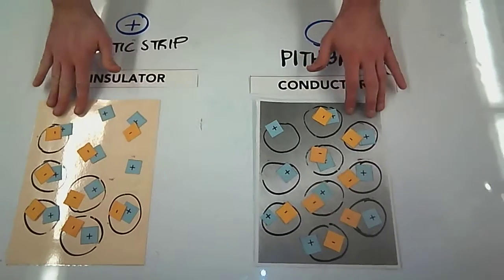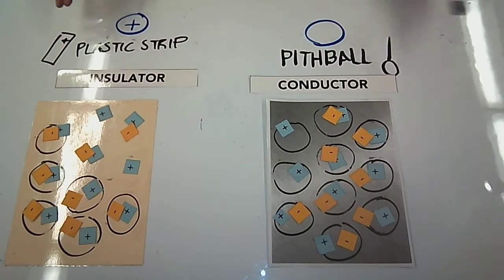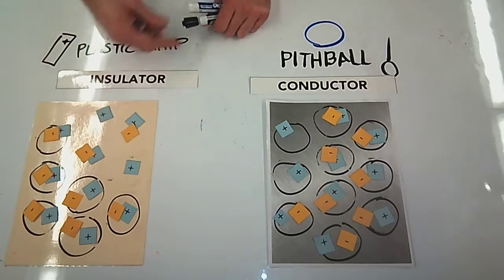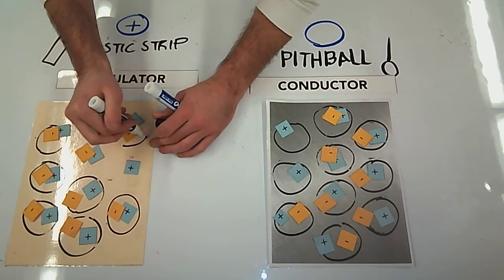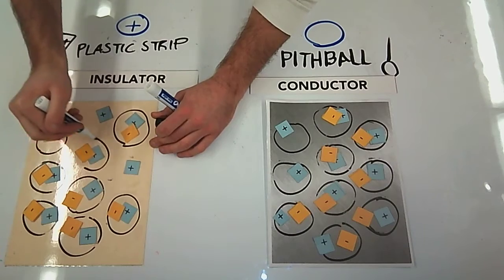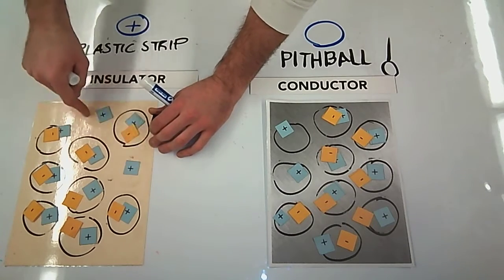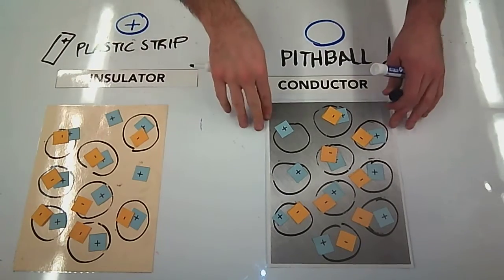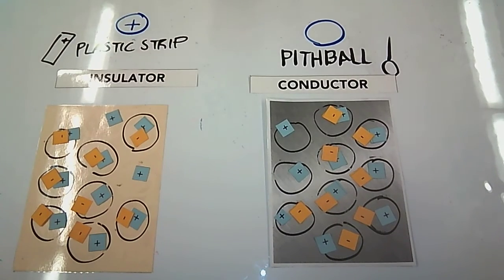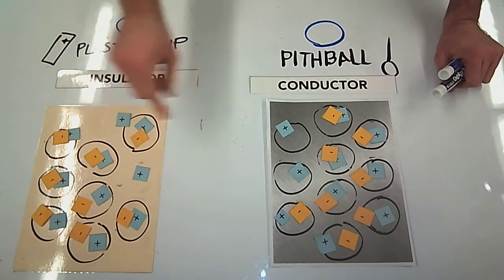So if I separate my objects and look at my plastic strip, there are still less electrons compared to protons. Specifically, this one has a charge of positive two, so two exposed protons in my model. It still has that positive charge, and it's still an insulator, which means that charge is localized right here.